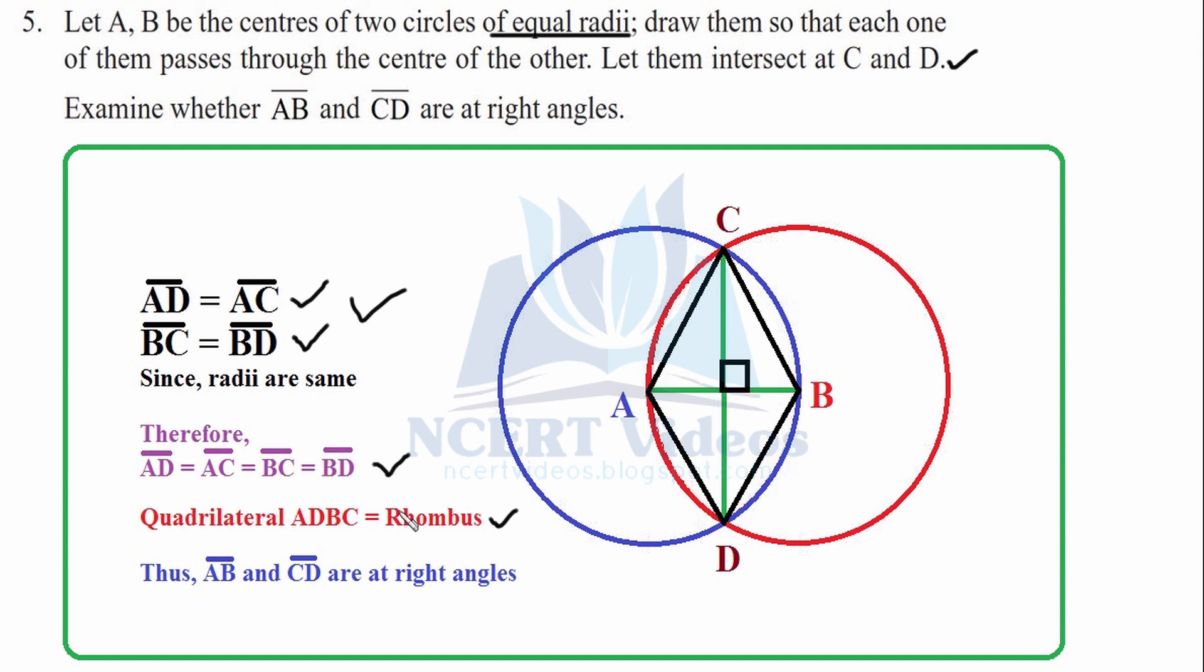However, both the diagonals are not equal. They are equal in case of square. If they would have been equal, then it would have been a square. But it is a rhombus because both diagonals are not equal. However, they bisect each other at 90 degrees. This was your last question, question number 5.